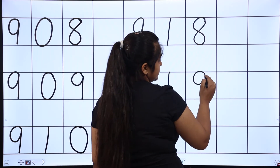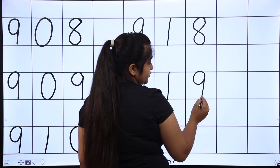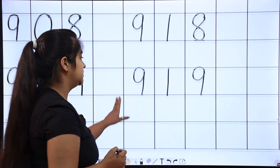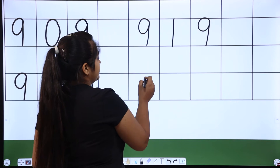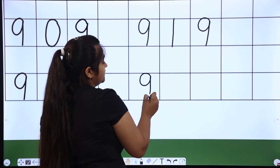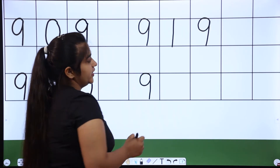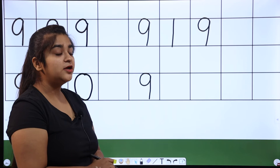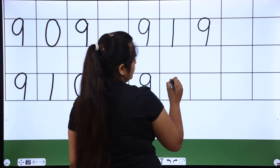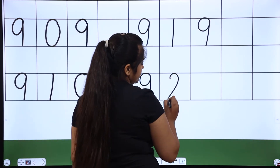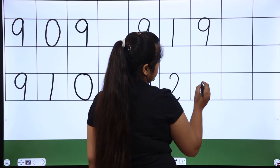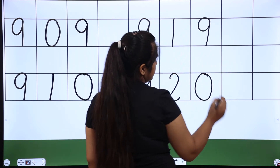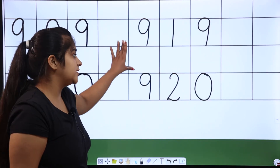Very good. You all are very intelligent. What will come next? Tell me. After 919, what comes? 920 — very good! 920. Now a new line is starting. 921.